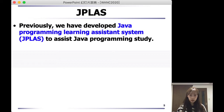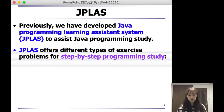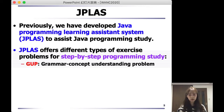Previously, we developed a Java programming learning assistant system to assist Java programming study. G Plus offers different types of exercise problems for step-by-step programming studies. There are five kinds of problems in G Plus now: GUP, grammar concept understanding problem; VTP, trace problem.